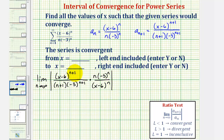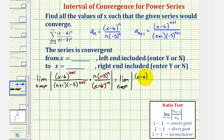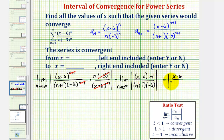Now let's begin simplifying. Notice how we have n plus one factors of x minus six in the numerator and only n factors of x minus six in the denominator, so this simplifies to one factor of x minus six. For negative three, we have n plus one factors in the denominator and only n factors in the numerator, so this simplifies to one factor of negative three. So now we have the limit as n approaches infinity of the absolute value of the quantity x minus six times n, divided by the quantity n plus one times negative three.